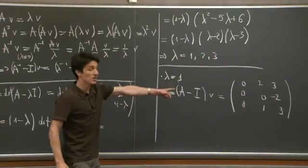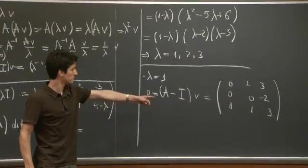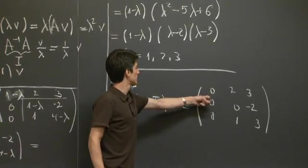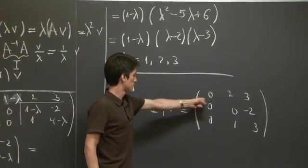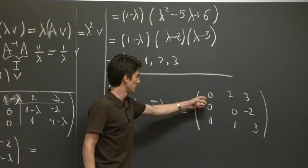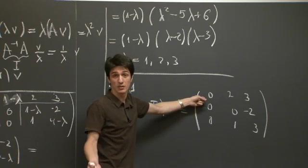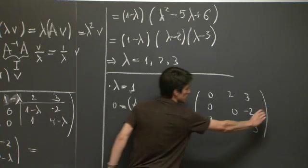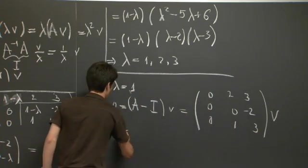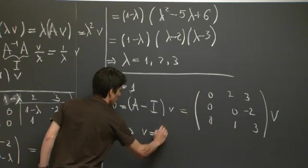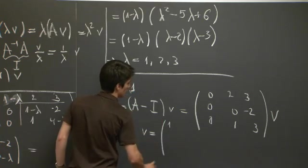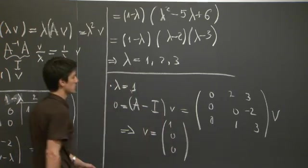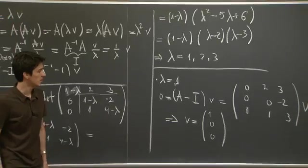And we see that the first column is 0. So the first variable will be our free variable if we want to solve this linear system of equations. And we can just set it to 1. And it's not hard to see that the other two entries should be 0.